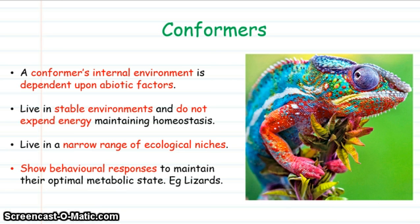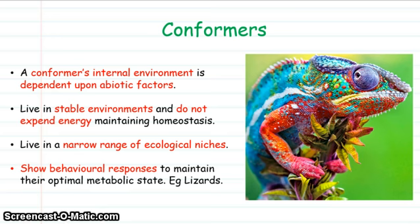Animals which are conformers have an internal state dependent on external abiotic factors. Organisms such as the chameleon shown here tend to live in stable environments where they don't spend lots of energy maintaining their homeostasis. As a result they're limited to a narrow range of ecological niches, and quite often they'll show behavioural responses to maintain an optimal metabolic state. For example, a chameleon might bask in the sun in the mornings in order to increase its body temperature.